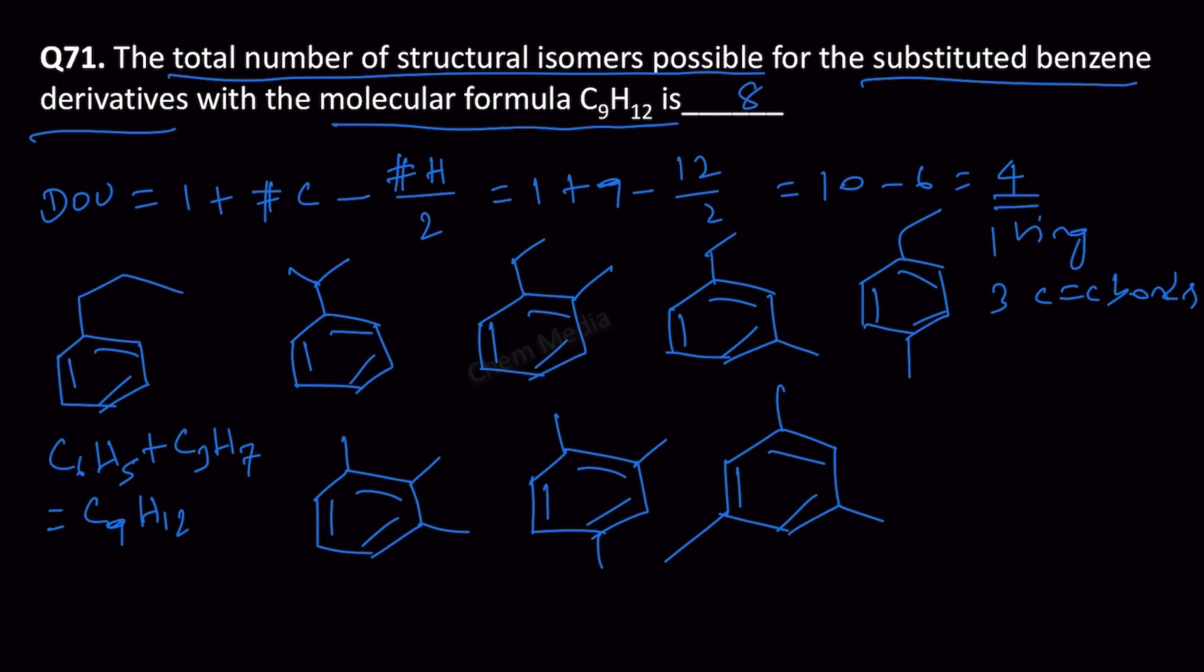That means the total number of structural isomers possible for the substituted benzene derivatives with the molecular formula C9H12 is 8.